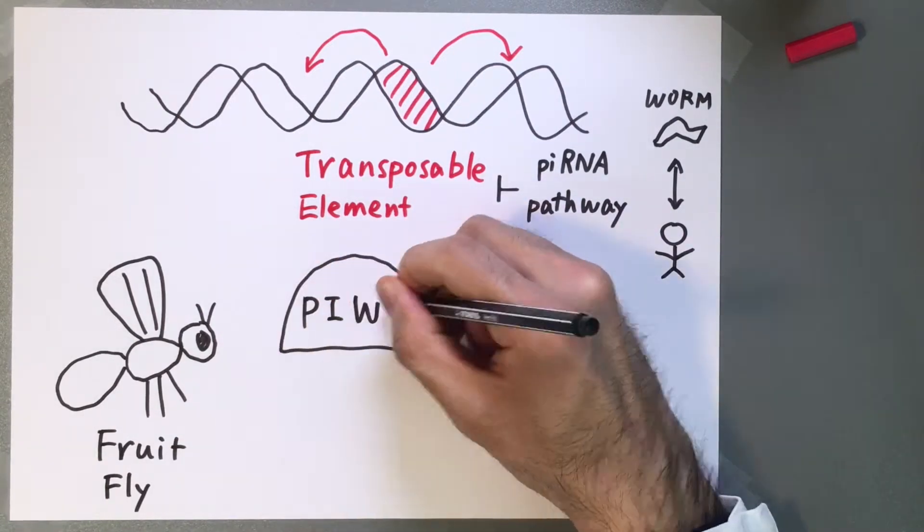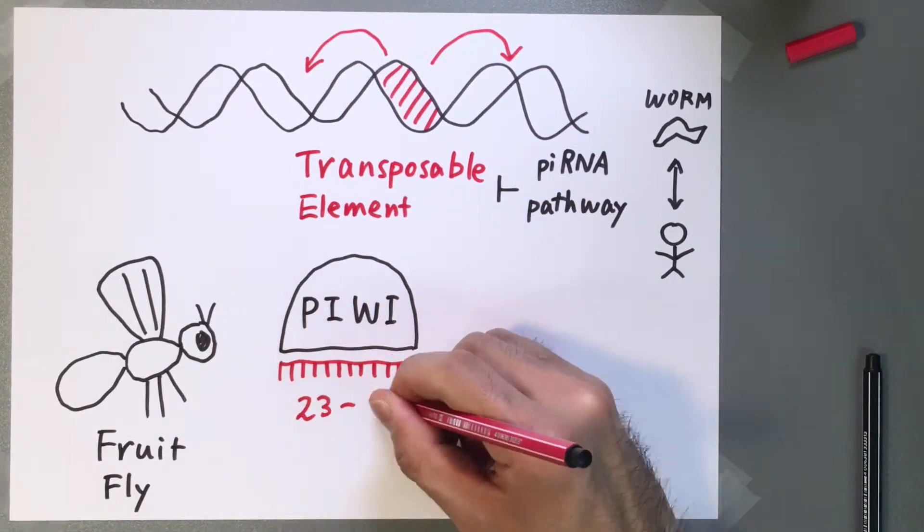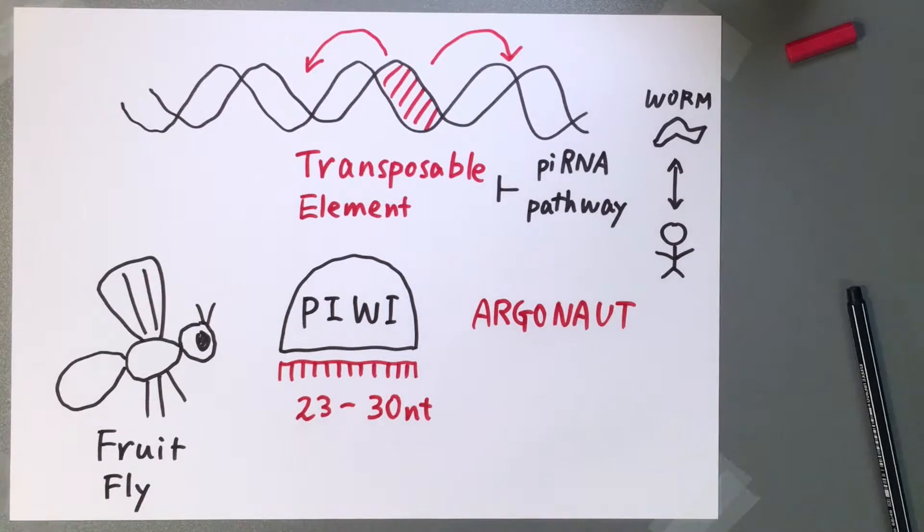At the center of the piRNA pathway act argonaute proteins loaded with 23 to 30 nucleotide long small RNA guides. Drosophila has three argonaute proteins for this pathway: Piwi, Aubergine, and Ago3.